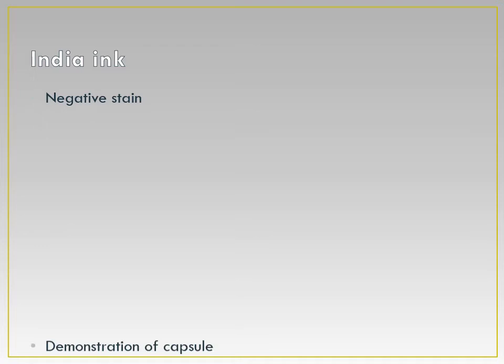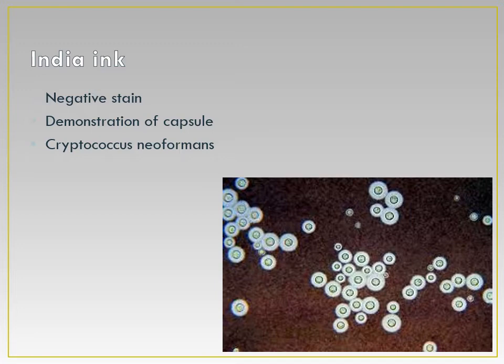India ink preparation is used as a negative stain for demonstration of the capsule. An example of a capsulated yeast is Cryptococcus neoformans. As it is a negative stain, the background color is black and the capsule is clearly visible. The specimen used is CSF.